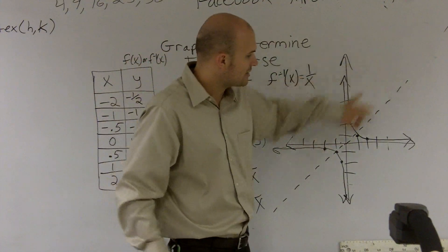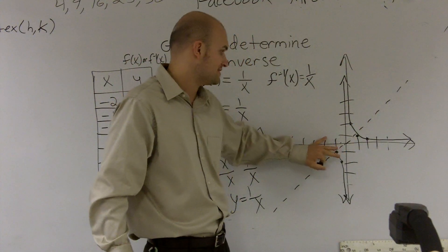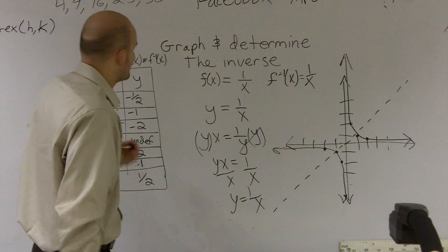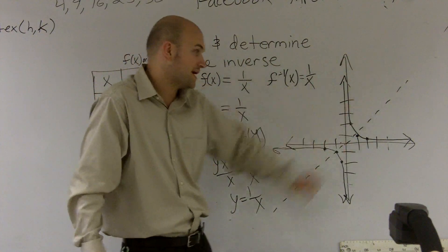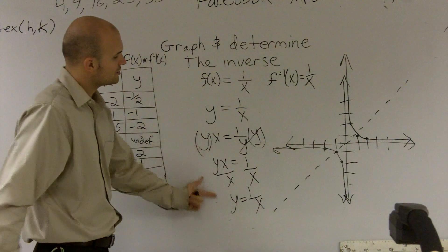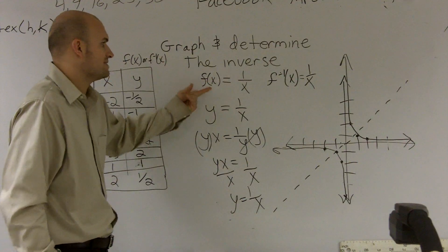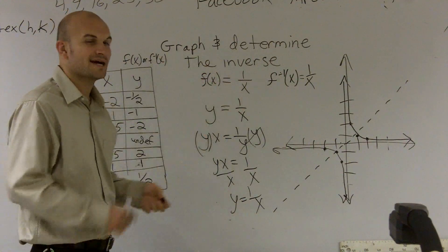So therefore, we can determine by graphing that these functions are inverses of each other. Obviously, they're the same thing. Also that they're symmetrical about the xy line. And then also by doing our math, we're able to determine and see that the function and its inverse are exactly the same.